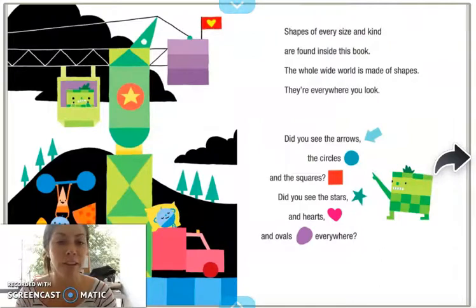Shapes of every size and kind are found inside this book. The whole wide world is made of shapes. They're everywhere you look. Did you see the arrows, the circles, and the squares?